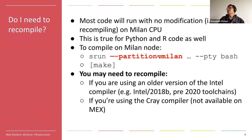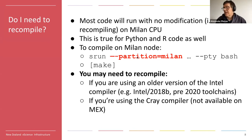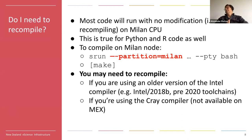You have a new partition called Milan, which is highlighted here. If you want to run on that partition, just use your srun or sbatch command with that partition. So it's very simple and hopefully not too disruptive for you.